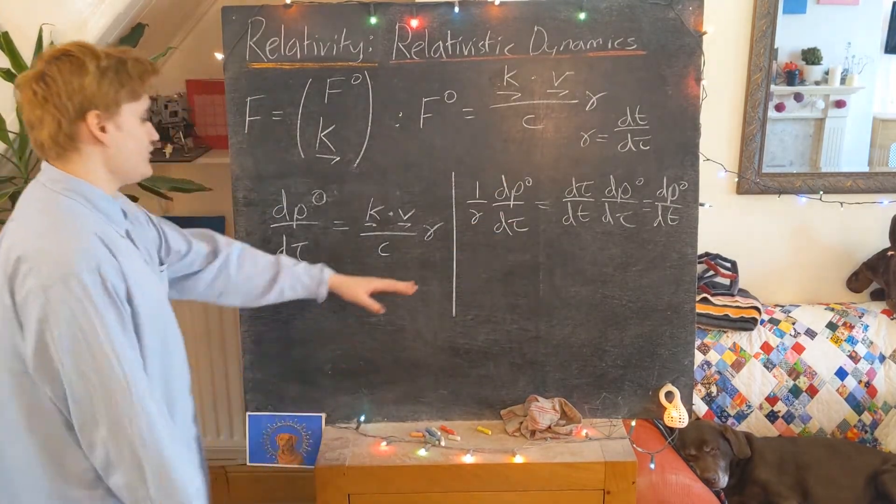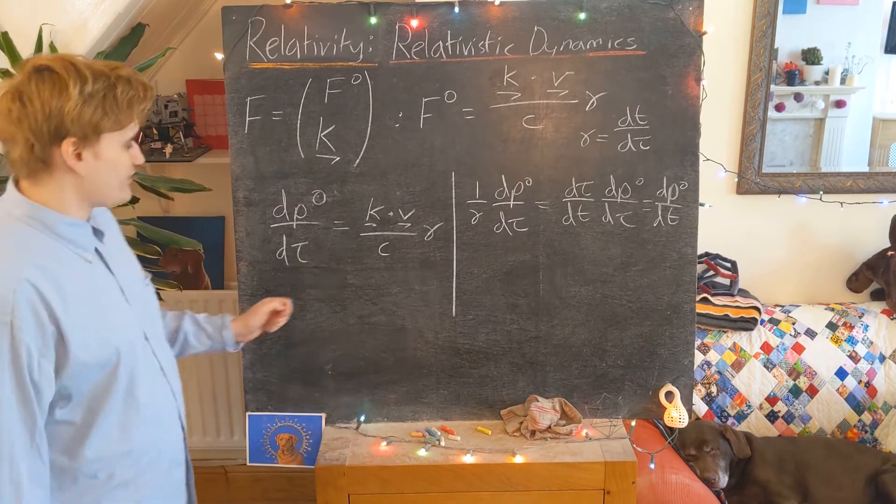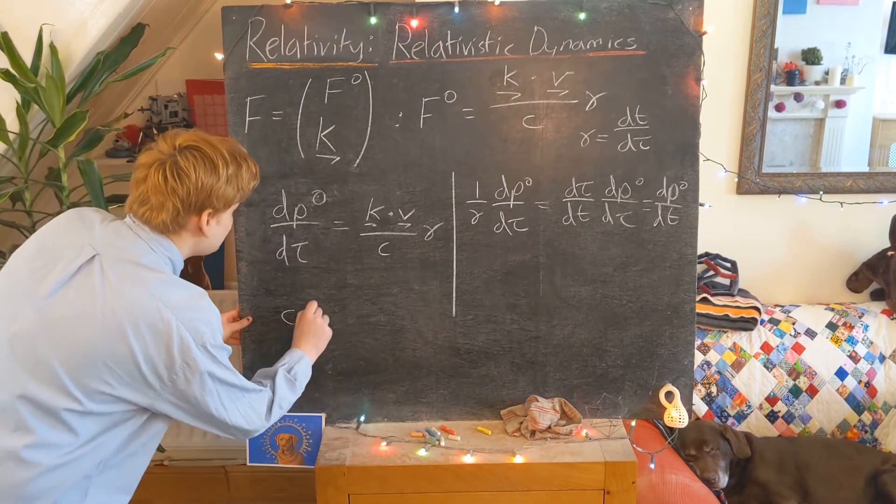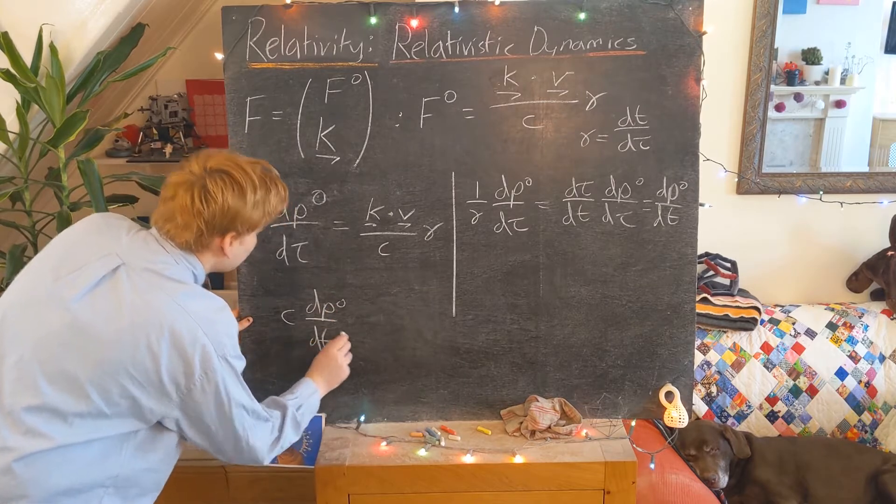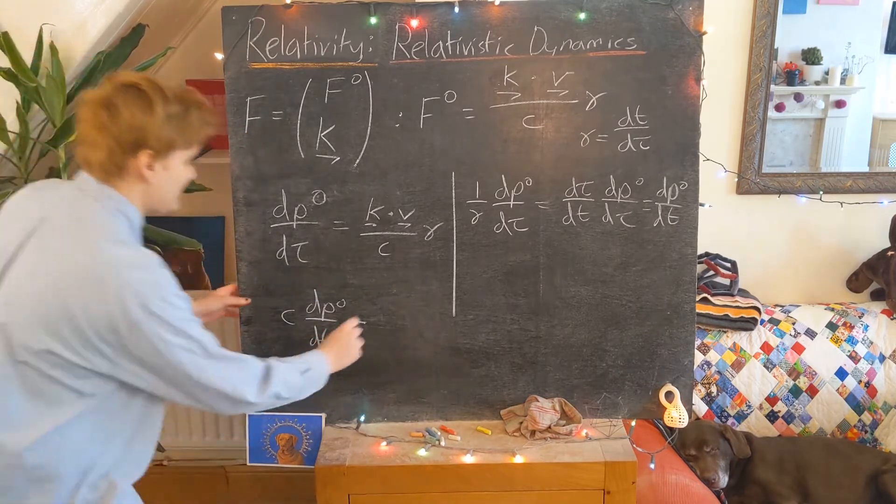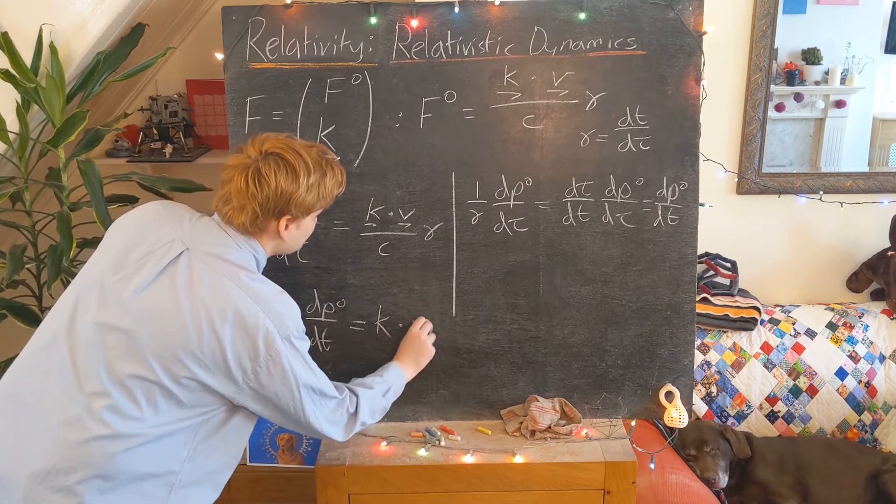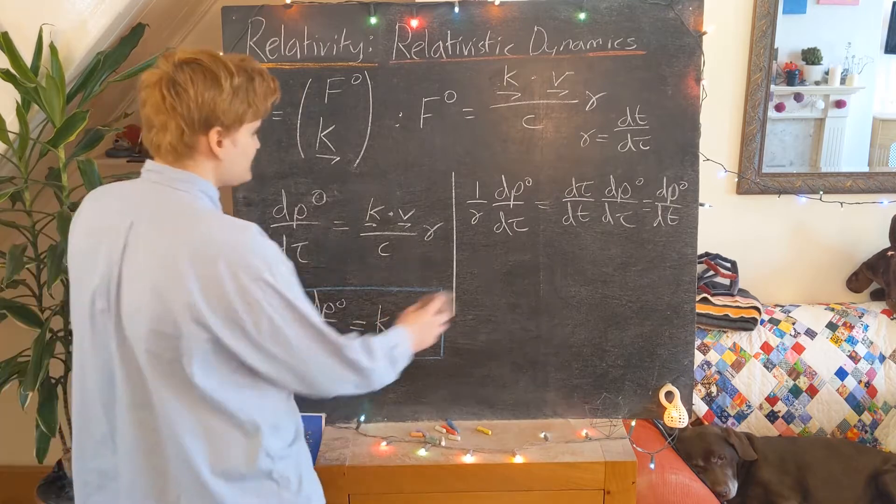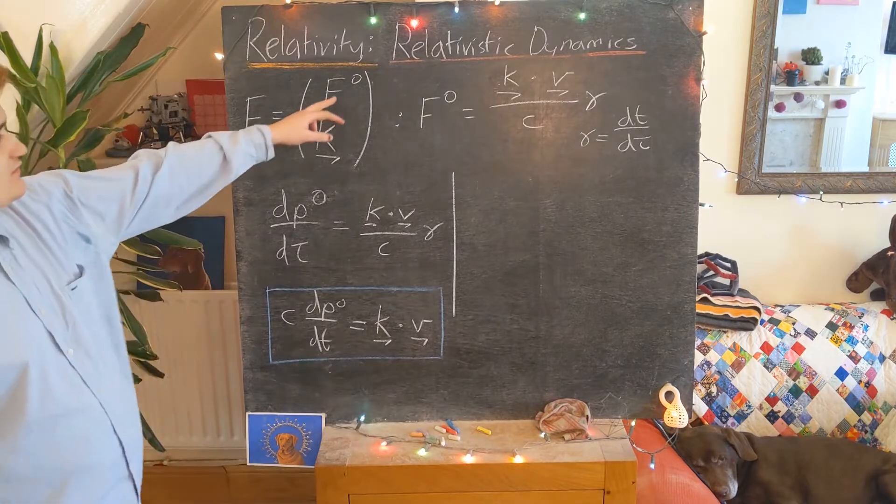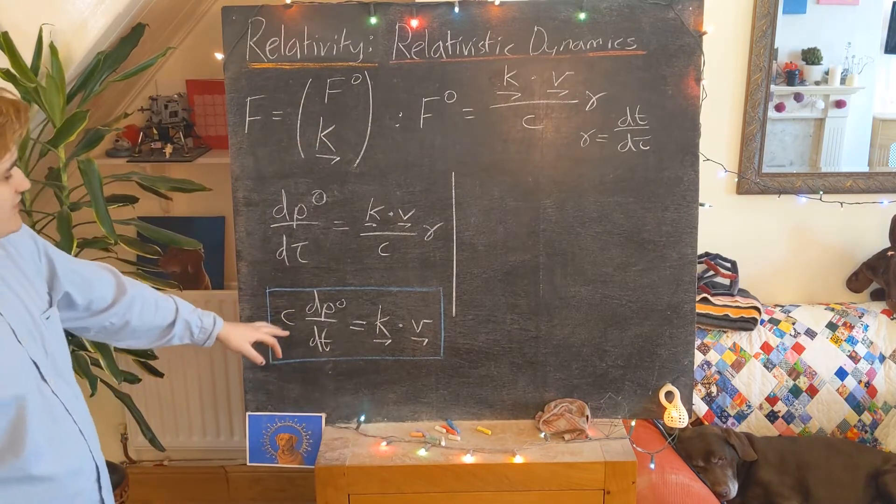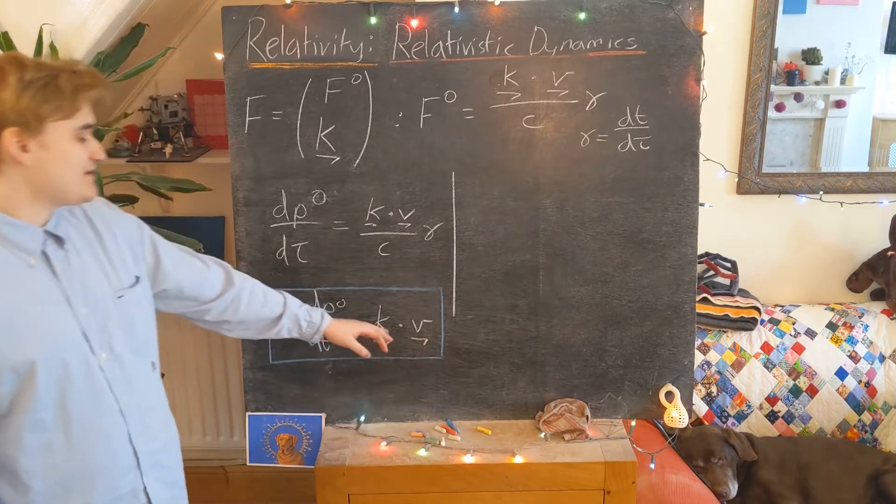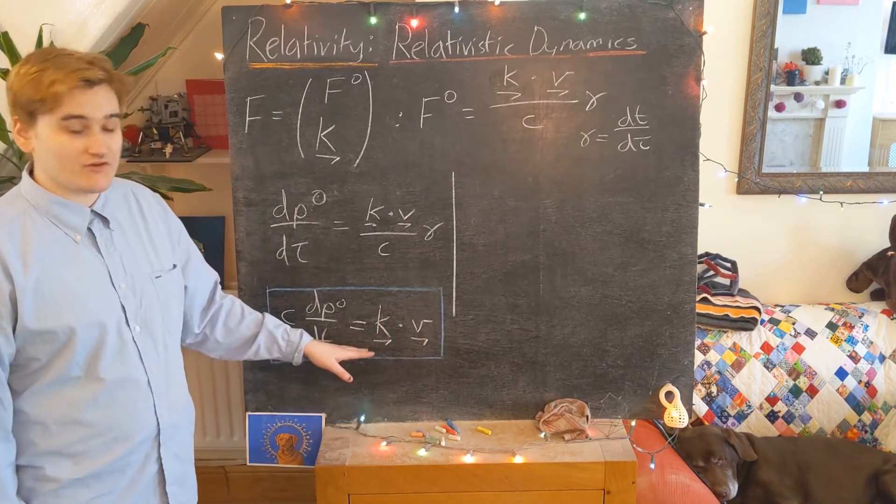I can now use this to rewrite what I've got over here. I'm going to multiply through by c. Then I'm going to have c dP0 by dt, doing this manipulation. I've already multiplied by c, so this is just now k dot v. So what is this thing now that we've identified? The timelike component of the four-force. You can rewrite it in this way using the four-momentum, and it's now just given by this fairly simple dot product between our effective force and our velocity.